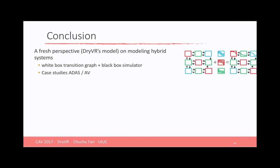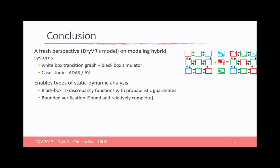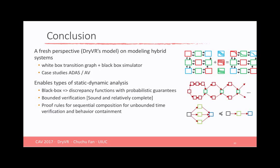So to conclude, we propose a fresh perspective of modeling hybrid system at this combination of white box transition graph and black box simulator. We conducted a sequence of case studies on different automotive maneuvers and control systems in the vehicle. This new way of modeling enables types of static dynamic analysis. For the black box, we can learn a discrepancy function that provides high probabilistic guarantee. With this, we can do the bounded safety verification that provides sound and completeness guarantee. We also provide several proof rules, including analysis for unbounded time using sequential composition and the simplification of the models using behavior containment.